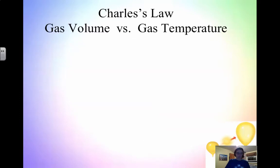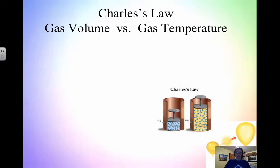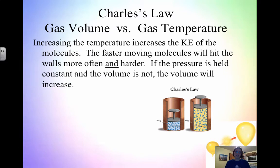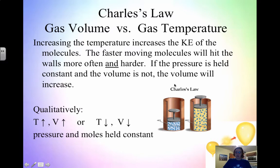This is an inverse relationship. The next one is volume and temperature. With volume and temperature, when you increase the temperature, it increases the kinetic energy of the molecules. The faster-moving molecules are going to hit the walls and each other more often and harder, which increases the pressure. But we want pressure to be held constant, so we have to change the volume. As we increase the temperature, in order to keep pressure constant, we have to increase the volume.